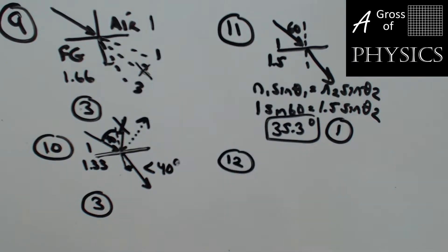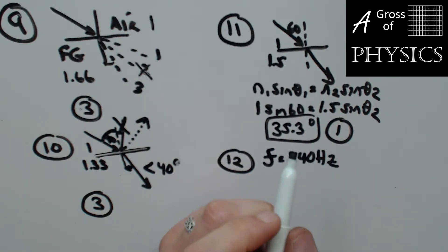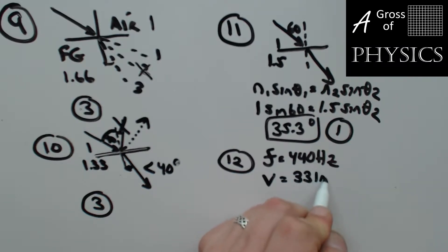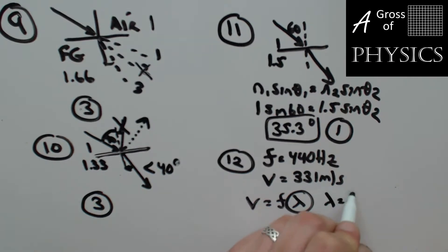Number 12: a sound wave produced by a trumpet has a frequency of 440 hertz and is traveling through air at STP. From the chart, the speed of sound in air at STP is 331 meters per second. We want the distance between successive compressions, which is the wavelength. So 331 divided by 440 gives a wavelength of 0.75 meters. Choice two.